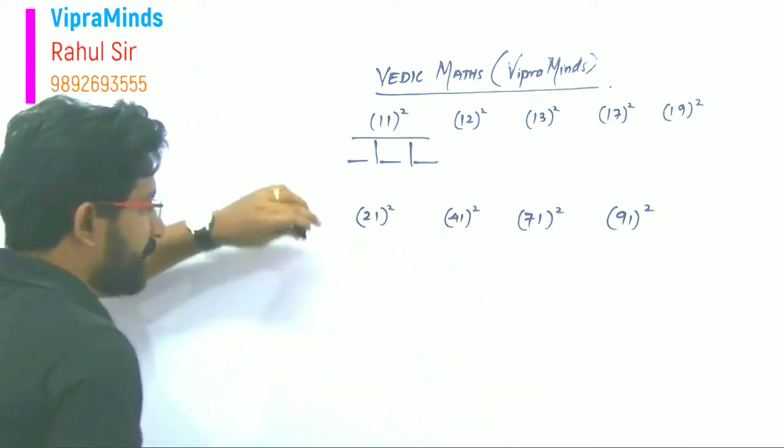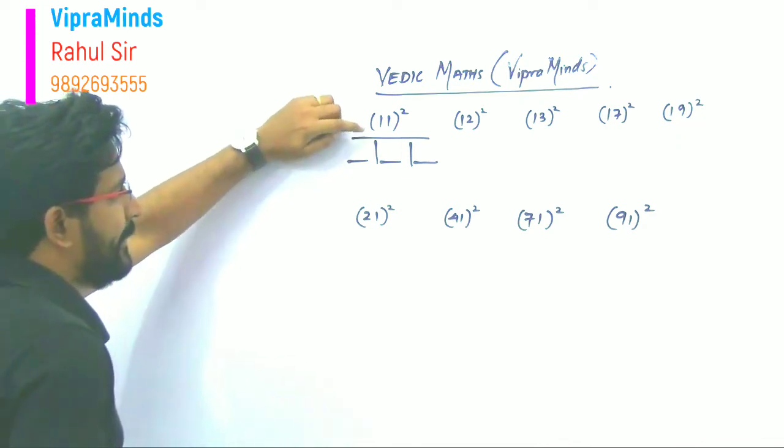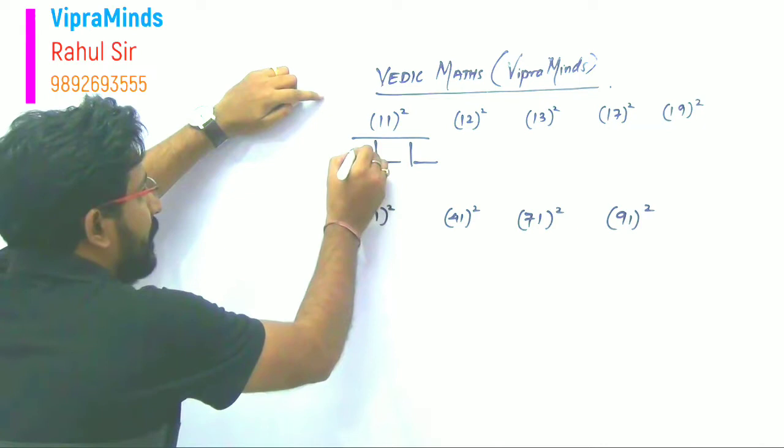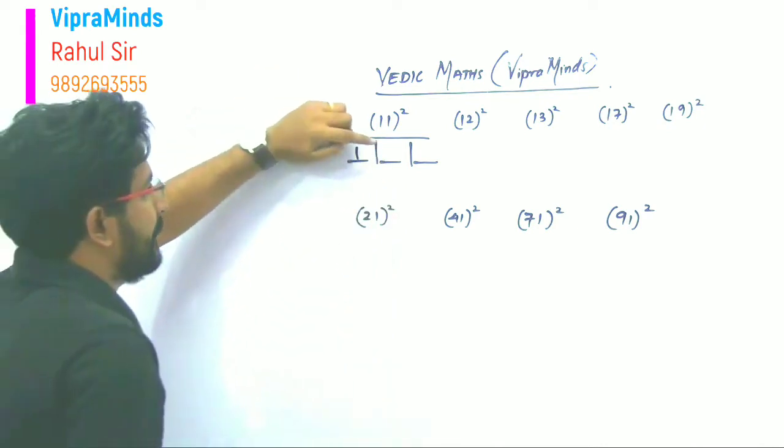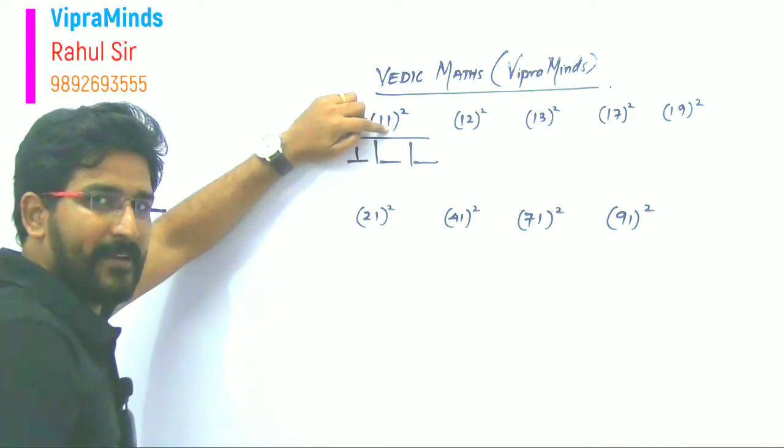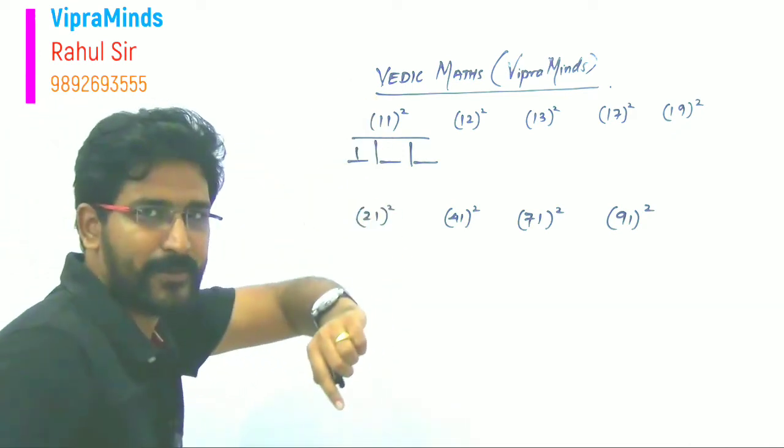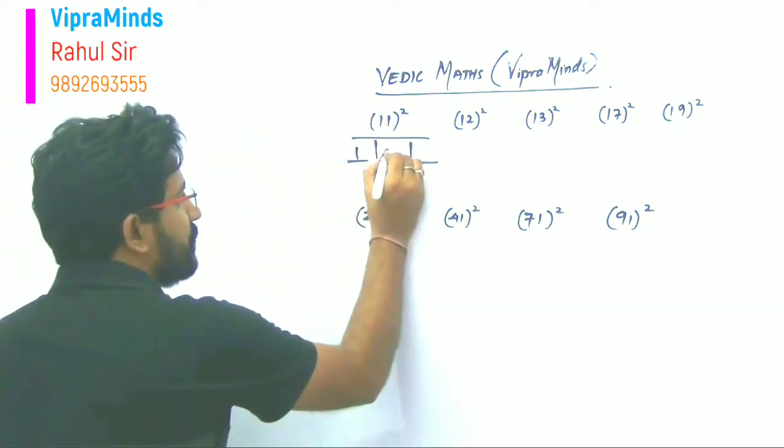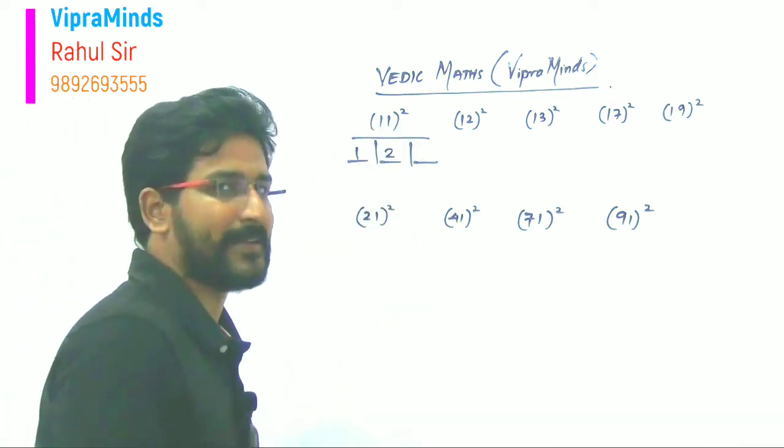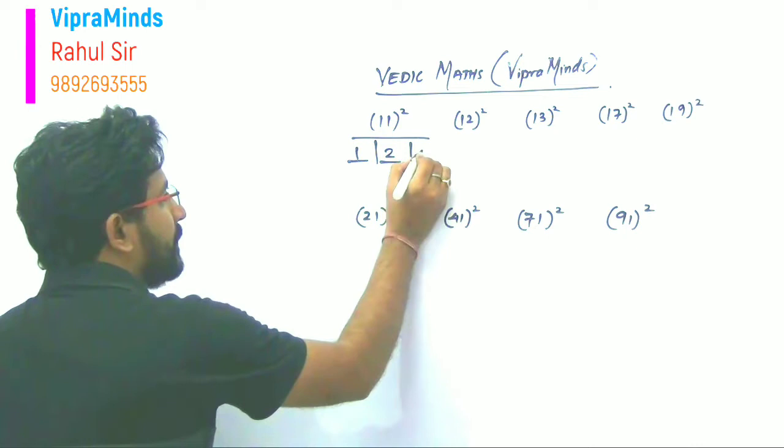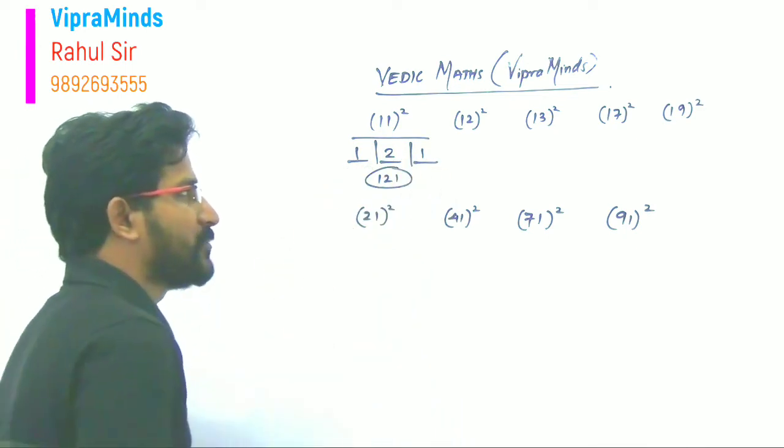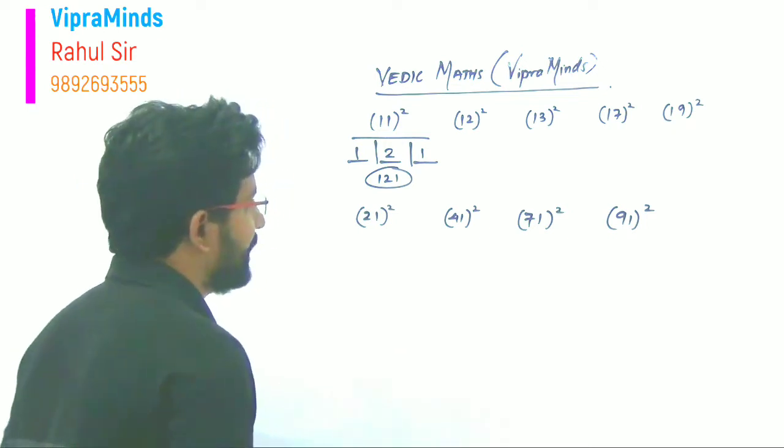Now the first block we have to fill. So what do we do here? First block is tens place square. That is one square is one. So answer will be one to one. So 121 is the square of 11.